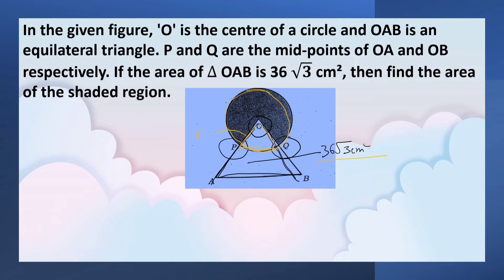We know that area of the equilateral triangle is equal to root 3 by 4 A square. It is given that area of the equilateral triangle is equal to 36 root 3 cm square. Here, root 3 and root 3 can get cancelled. A square is equal to 36 times 4.